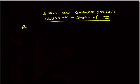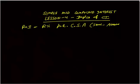Now what if your rate of interest is R percent per annum compounded semi-annually? Semi-annually means after every six months — half a year. R percent per annum compounding semi-annually means that your principal will change after every six months.